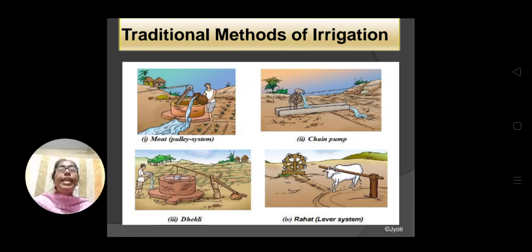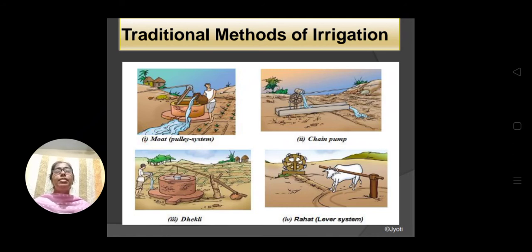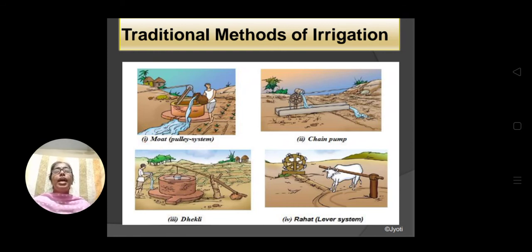The next is Dhekli. In Dhekli, there is a log, and at one end of the log a big stone or heavy material is attached. The person drawing water ties a bucket to the other end of the log, dips the bucket in the water, and after the bucket is filled, because the other end of the log is heavier, automatically the bucket with water is pulled out and that water is poured in the nearby field.